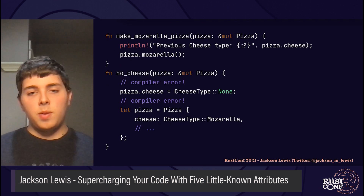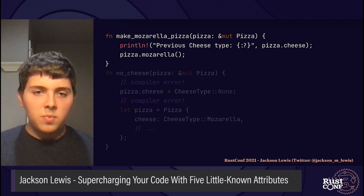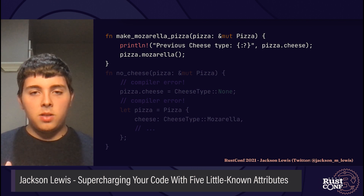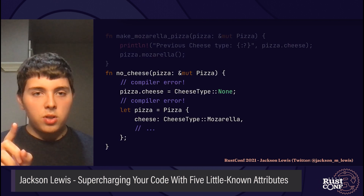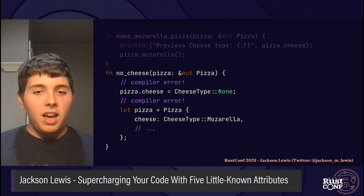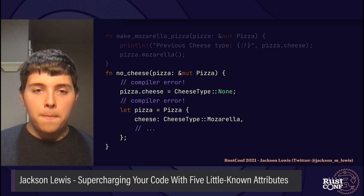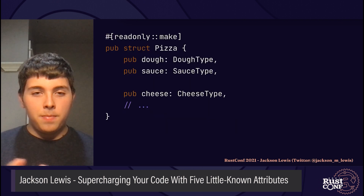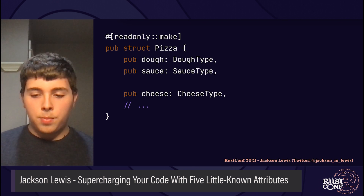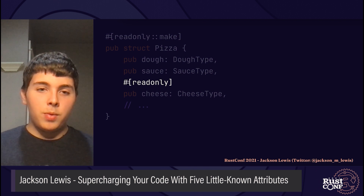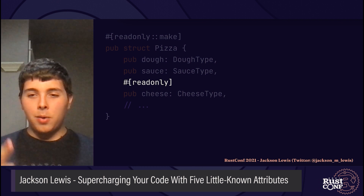All you have to do is add readonly as a dependency to your crate and put the readonly make attribute on the struct of your choosing. Any function that would have had access to these fields, even if they were public, can still write to them — for example, the mozzarella method can still write to the struct directly. But outside the file, you can only read from the public fields, and you can't initialize the struct with struct initialization syntax. By putting the readonly attribute on individual fields, the other fields can still be written to based on the normal publicity modifiers. And that's the power of readonly.